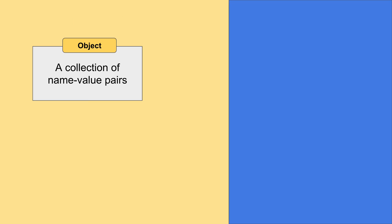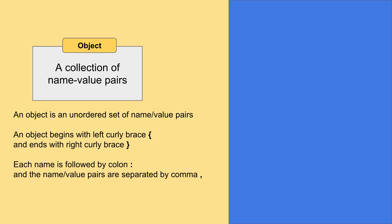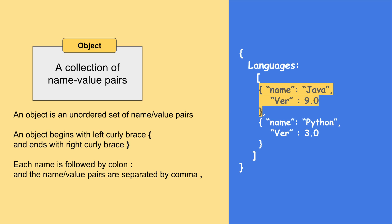An object is an unordered set of name-value pairs. It always begins with a curly brace and ends with a curly brace. Every name is followed by a colon, and name-value pairs are separated by commas. In our languages example, we have two objects within the languages array — each one is enclosed within curly braces.